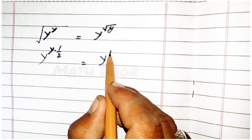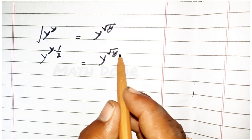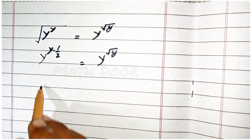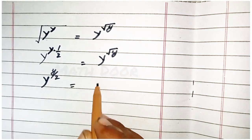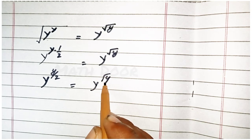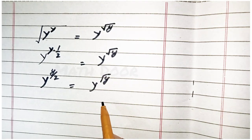now we write this one y power square root y. We write this one like as y power y over 2 is equal to y power under root y.